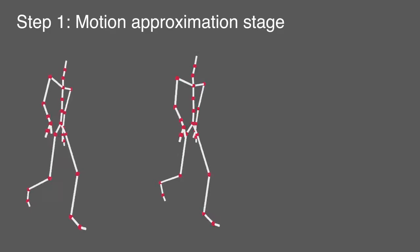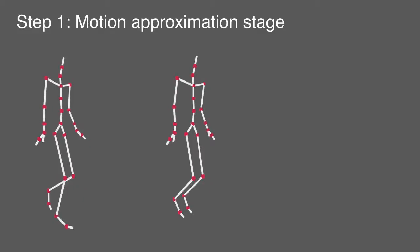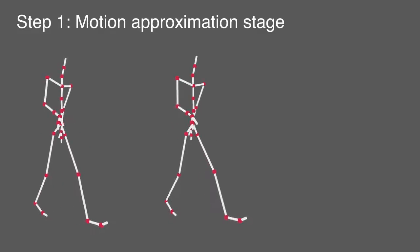First, in the motion approximation stage we decompose the input motion into the motions of limbs that can be approximated by planar oscillations of individual bones.